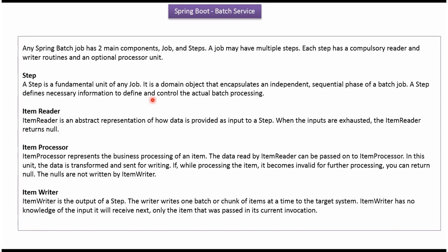Both reader and writer are compulsory, and the processor unit is optional. A step is the fundamental unit of any job — a domain object that encapsulates an independent sequential phase of a batch job. A step defines the necessary information to define and control the actual batch processing. Item reader is responsible for providing input data to the step. Item processor transforms the data and sends it for writing. Item writer is the output of a step, writing one batch of items at a time to the target system.